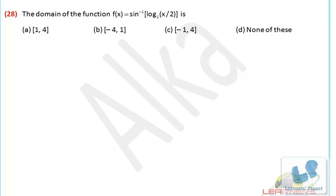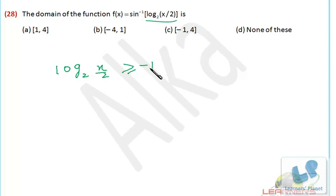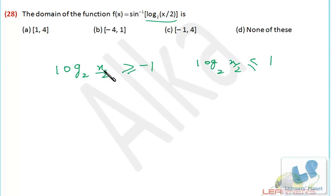Now we have this problem with trigonometry as well as a logarithm. For sin⁻¹ of log base 2 of (x/2), the argument must lie between minus 1 and 1. So log₂(x/2) ≥ minus 1 and log₂(x/2) ≤ 1. Apart from that, x must be positive because the logarithm of a negative quantity is not defined — so x > 0 is a preliminary condition.